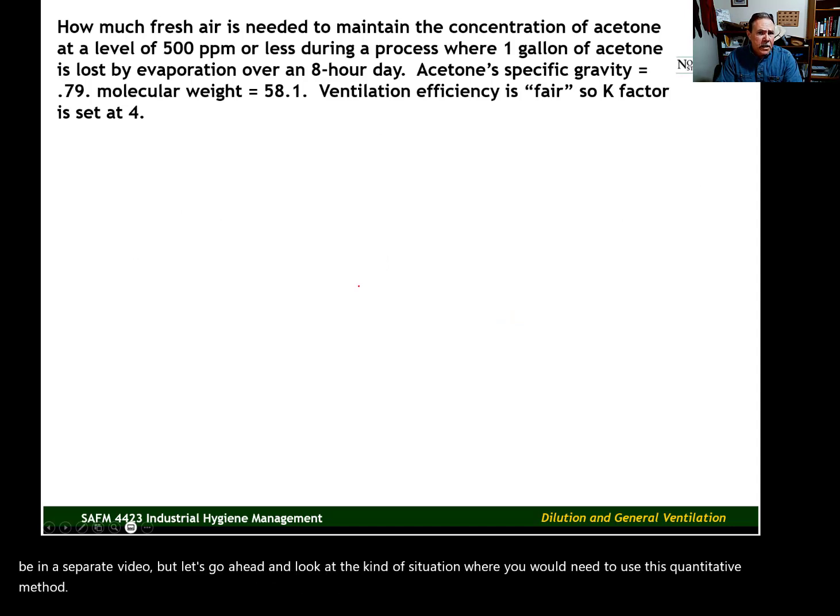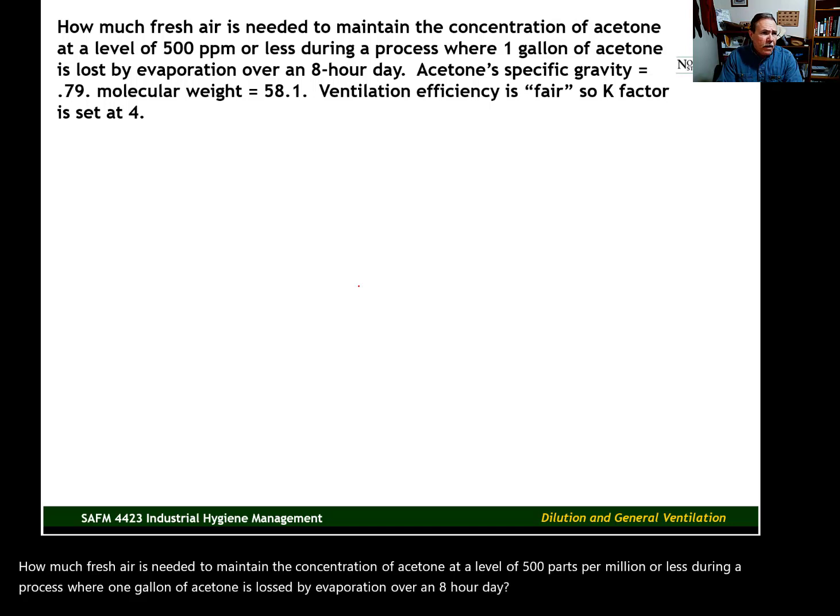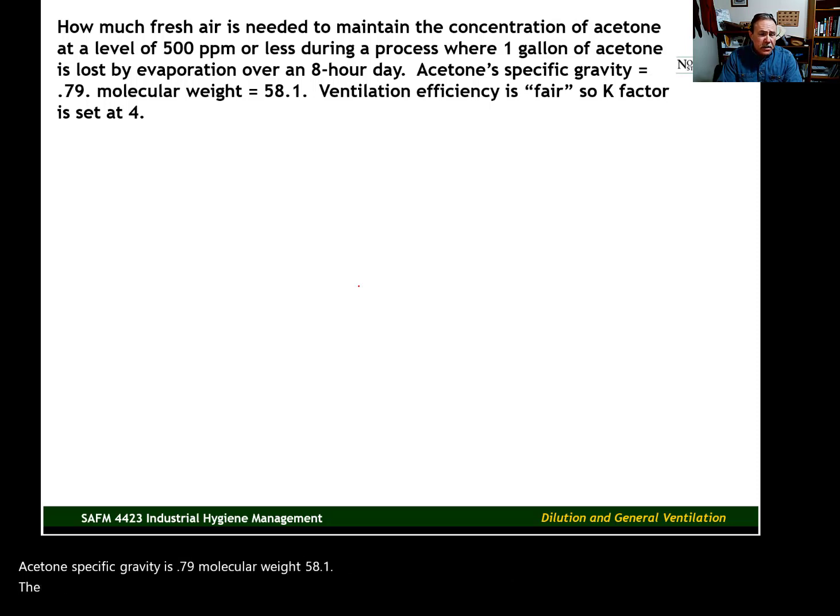How much fresh air is needed to maintain the concentration of acetone at a level of 500 parts per million or less during a process where one gallon of acetone is lost by evaporation over an eight hour day. Acetone's specific gravity is 0.79, molecular weight 58.1. The ventilation efficiency is considered fair, so the K factor is set at four.